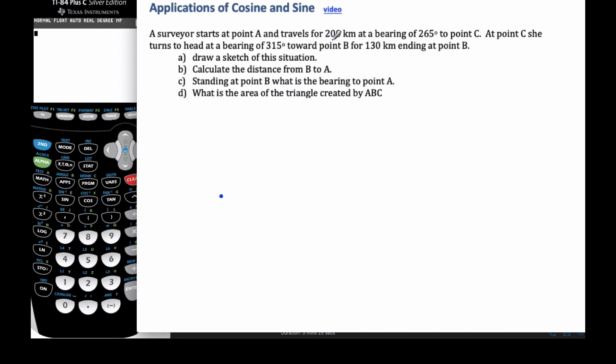Our surveyor starts at point A and travels for 200 kilometers at a bearing of 265 to point C. All right, so I have to think about my bearings. I'm going to pull a lot of information in here. So if this is point A, this is my point A. Here's my compass rose.